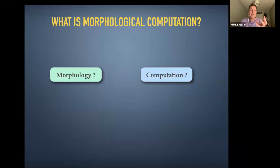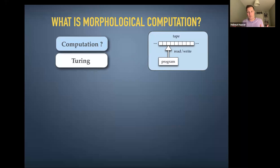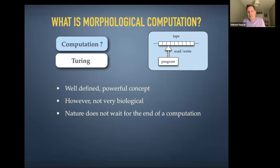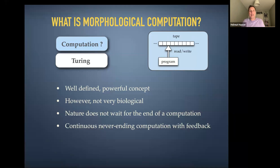What about computation? When we think about theoretical models, the first model that comes to mind is a Turing machine — an incredibly powerful and well-defined concept. However, it's not very biological, and since we're talking about bio-inspired concepts, we have to think about what kind of computation actually happens in real biological systems. We're not going to wait like a Turing machine for a finite number of steps. Rather, we deal with computation that is more analog, continuous, never-ending, and has a feedback loop through the environment.